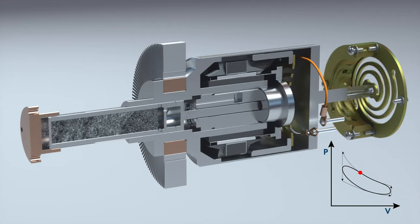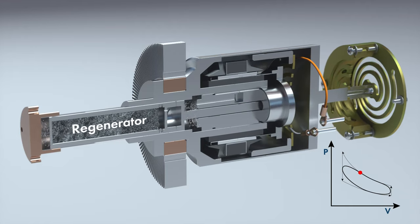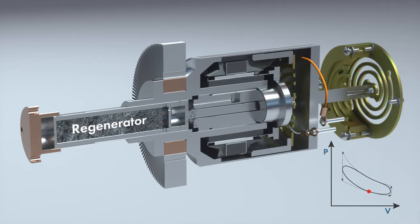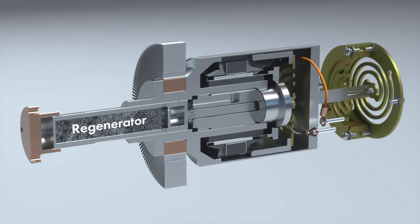Inside the displacer is a porous metal structure called the regenerator. The regenerator alternately stores and releases the heat of the helium gas to drastically increase the cycle efficiency.